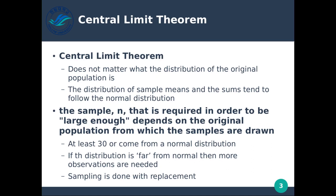If the distribution is far from normal, more observations are needed. Sampling is done with replacement, so whenever we're taking samples from a population that is possibly not normally distributed, everything we take out we put back in before we do our next sample.